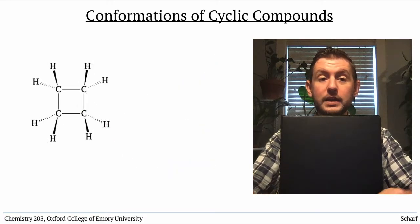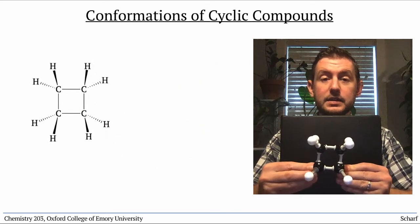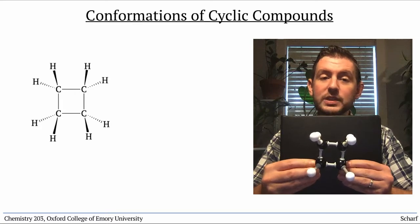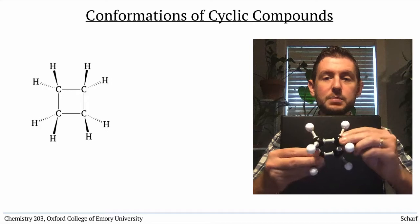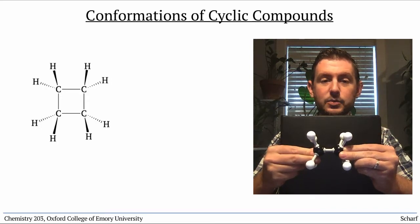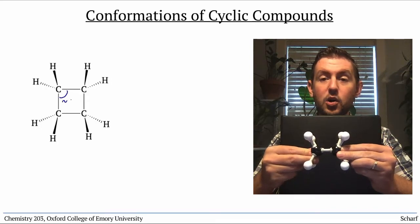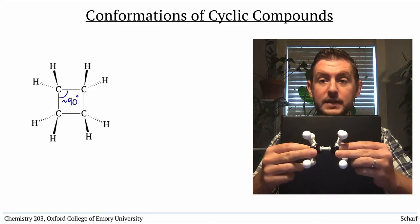A four-membered ring, cyclobutane, actually has slightly more flexibility. If it was completely flat with 90 degree angles, all its substituents would be perfectly eclipsing.